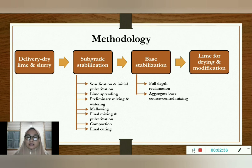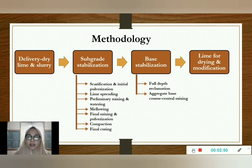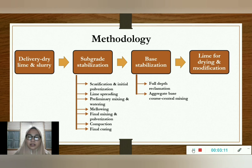The next phase is base stabilization, starting with full depth reclamation, followed by aggregate base course and central mixing. The construction procedures are similar to subgrade: scarification and pulverization, lime spreading, mixing and watering, curing and compaction. For the aggregate base course, steps include mixing, placing material, compaction and curing. Last but not least, lime for drying and modification is divided into base material and subgrade material. After all four phases are completed, we will obtain a well-treated clay material stabilized with lime, which is good for its stabilization.